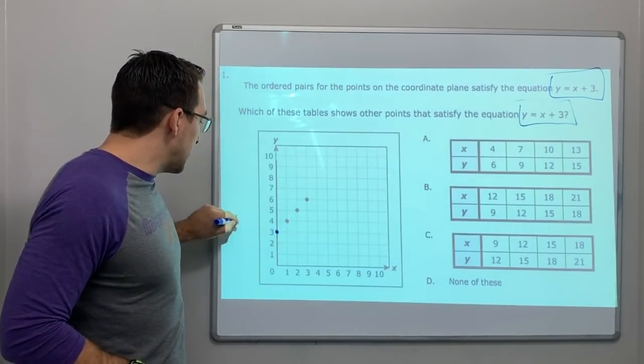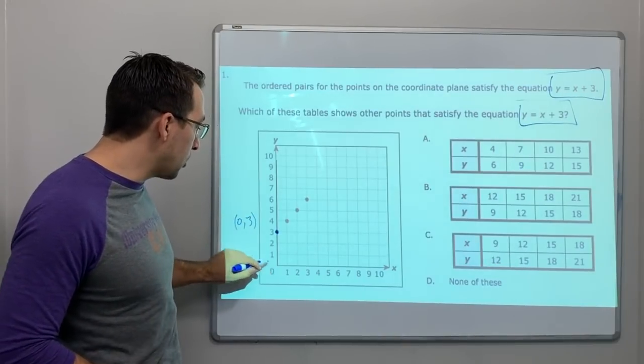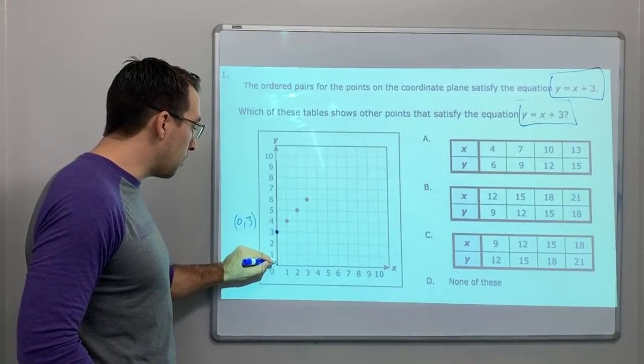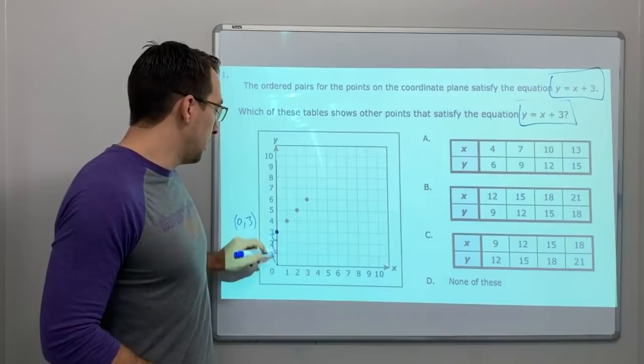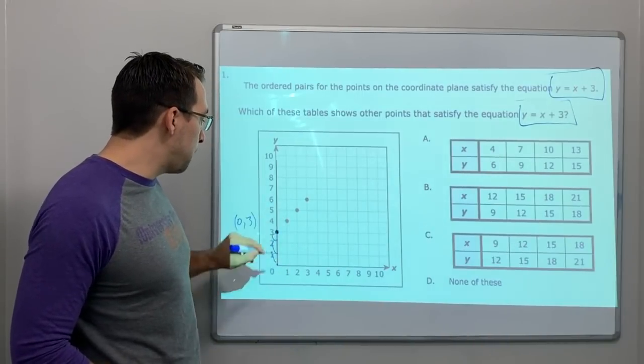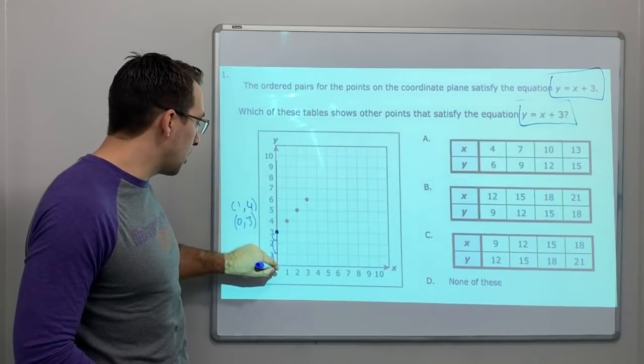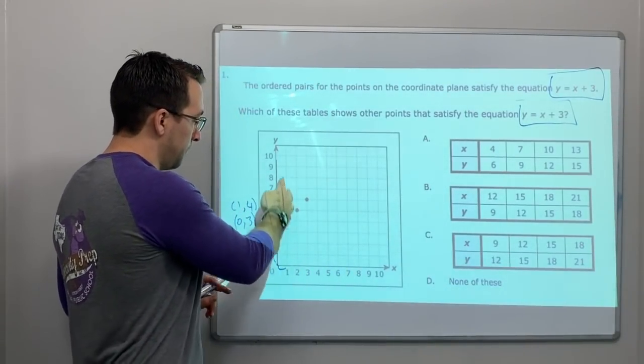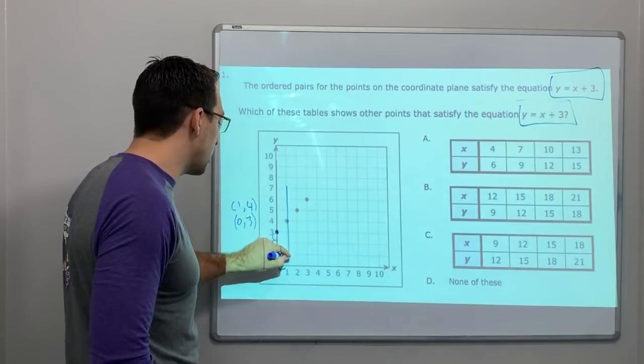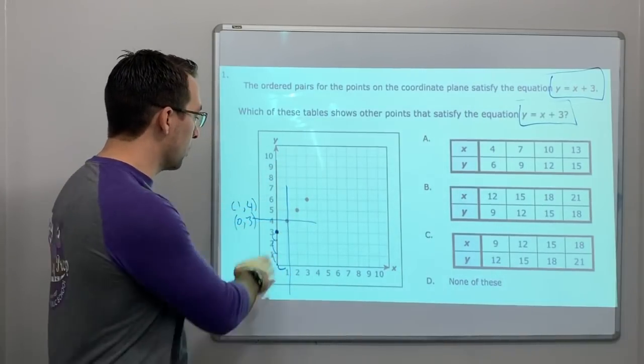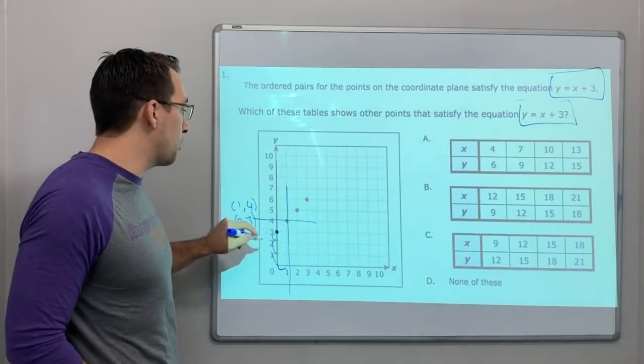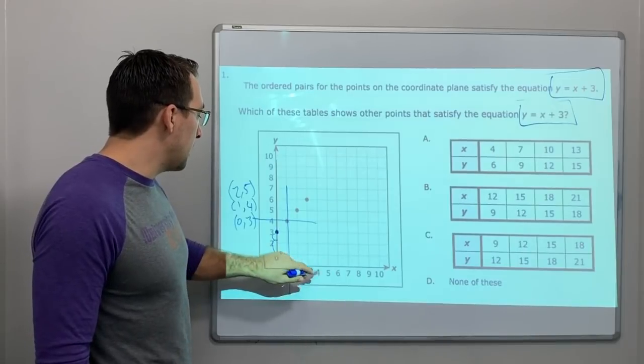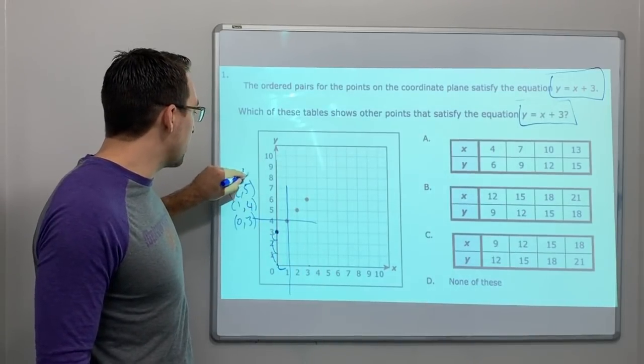That is the point 0, 3. Right? Because we're on the x value. We do x first, 0, right here. And then we go up 1, 2, 3. This is going to be 1, 4. 1, 4. Because we're going to go over 1. x first. 1 is our value of the x. And so do you see this point? It goes across is the 1, and then it crosses the 4. So that point is 1, 4. Then we have 2, 5. 2, 5. And then 3, 6. Do you guys see the pattern here?